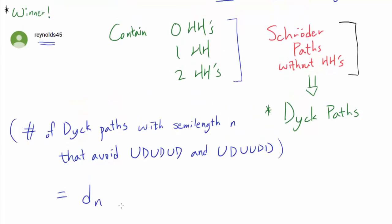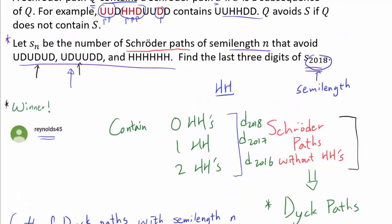Going back up, in particular, we care about D_2018, D_2017, and D_2016. Because when we have zero HHs, the entire path is going to be a Dyck path of semi-length 2018. If we have one HH, that's one semi-length of Hs, the rest of them has to be a Dyck path of semi-length 2017. And the same thing here, we have two semi-lengths of HHs, and we care about a Dyck path of semi-length 2016, so the entire semi-length is 2018.